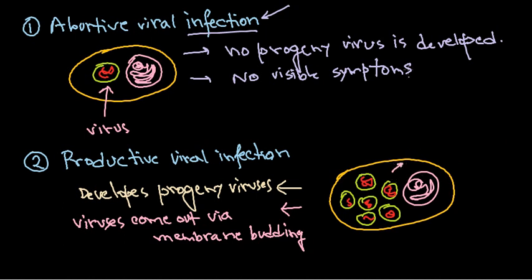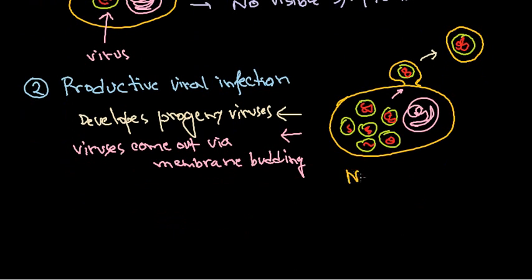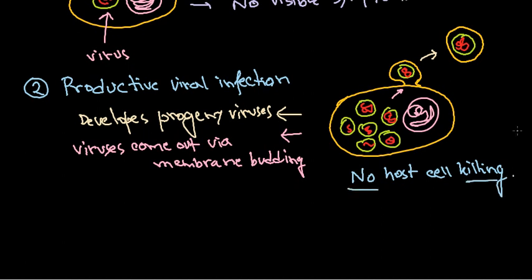In membrane budding, the virus particles are pinched through the host cell membrane and come outside. The particles are released outside with a membrane envelope, and they are not destroying the host cell. So in productive viral infection, there is no host cell killing — no host cell destruction.